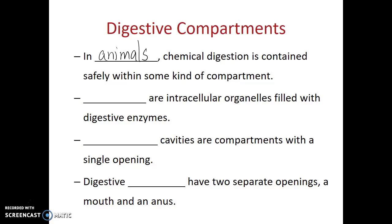At the cellular level, lysosomes are intracellular organelles filled with digestive enzymes, so they are the protective digestive compartments at the cellular level. At a larger scale, simpler multicellular organisms may have something known as a gastrovascular cavity — a digestive compartment with a single opening that functions both as the mouth and the anus. More advanced organisms have what's called a digestive tube.